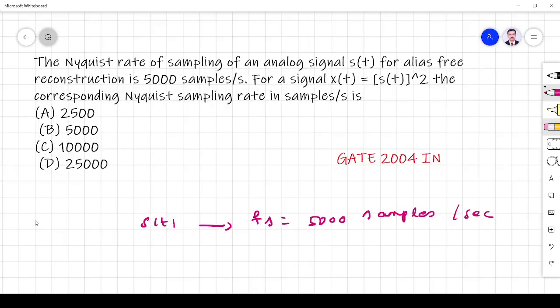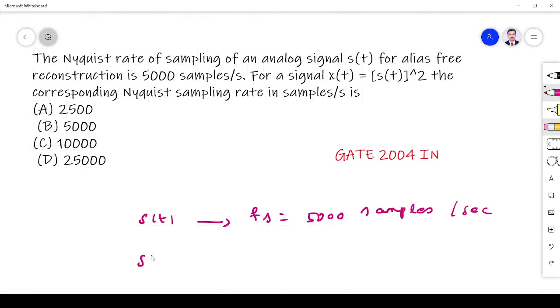For a signal x(t) equal to s²(t), find the corresponding Nyquist sampling rate.